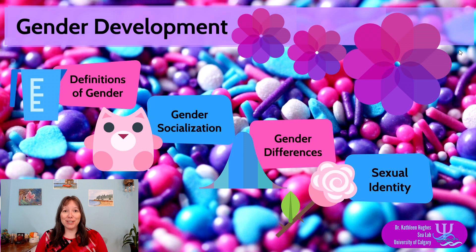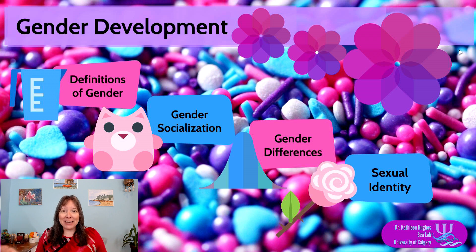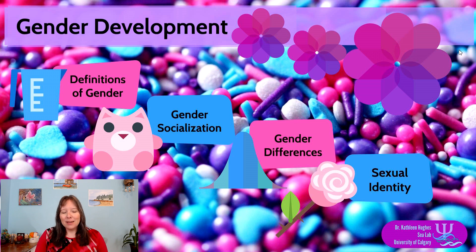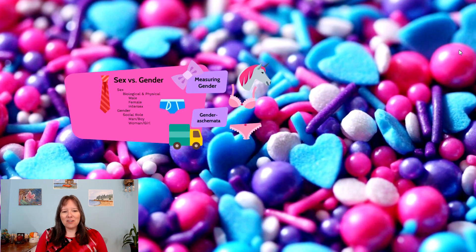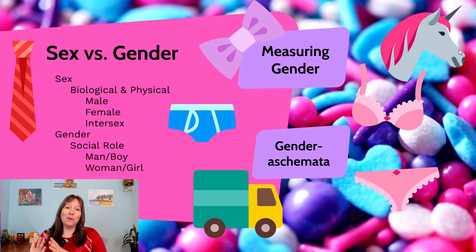Welcome to developmental psychology unit 8. This is our final unit of the semester and we're going to be talking about gender and sexuality development. We're going to start off trying to define what we even mean by gender, because it is actually a very complicated construct and idea. We'll start by describing the difference between what we know as sex and gender.